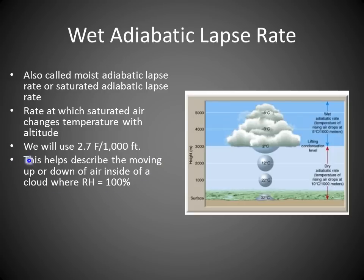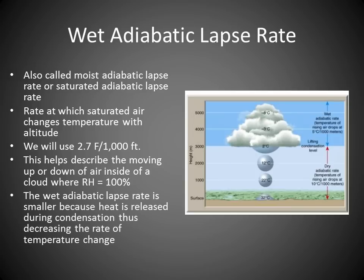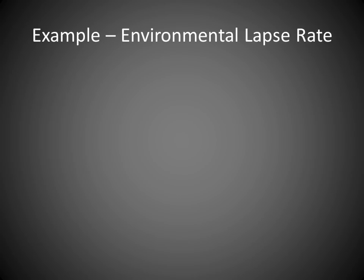We use this lapse rate to describe air movement within a cloud. Looking at the diagram, the dry adiabatic lapse rate is 10 degrees per thousand meters, but once you get into the cloud — where relative humidity is 100% — you switch to the moist or wet adiabatic lapse rate of 5 degrees per thousand meters. The rate slows because during condensation, heat is released, which decreases the rate of temperature change. We'll use this wet adiabatic lapse rate to understand cloud formation.